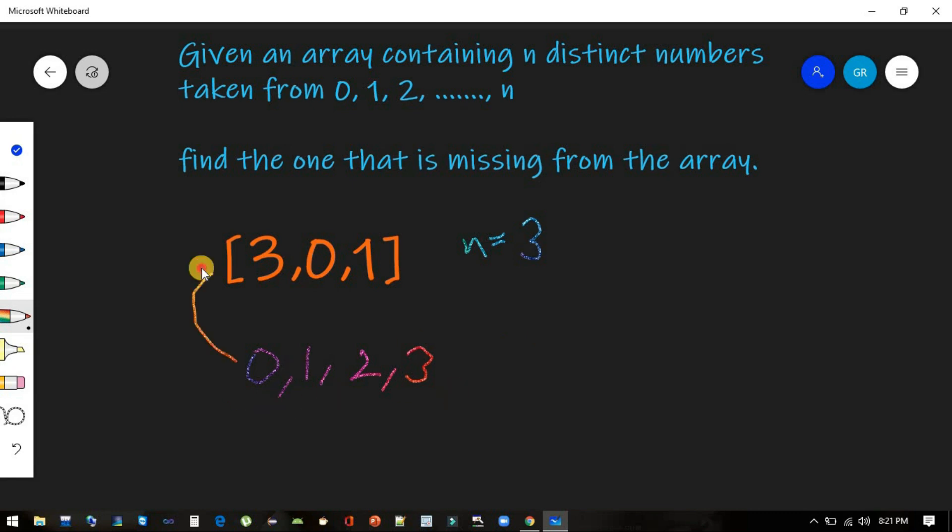And from that they have given this input. If we match both these arrays, you can see clearly 2 is missing from here.